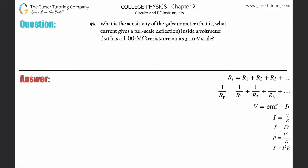Number 42: What is the sensitivity of the galvanometer, that is, what current gives a full-scale deflection inside a voltmeter that has a 1.00 MΩ resistance on its 30 V scale? In other words, what current will register a full deflection, meaning the voltmeter will detect a full deflection?